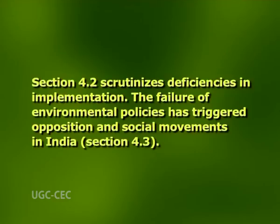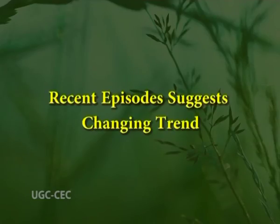The failure of environmental policies has triggered opposition and social movements in India. Section 4.3, the last section of this chapter, reconsiders this phenomenon in the case of the Calcutta agglomeration. The emphasis will not so much be on the physical reality of India's environment as it would be in an engineering context. As this is an effort in sociology, the focus will be on academic assessments of environmental initiatives and even more on governmental and semi-governmental reports that are normally expected to serve as guidelines for state action. Recent episodes suggest a changing trend.